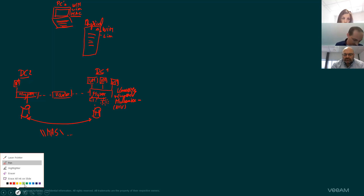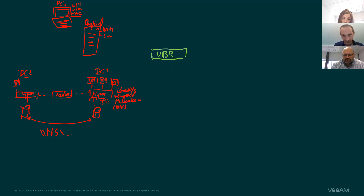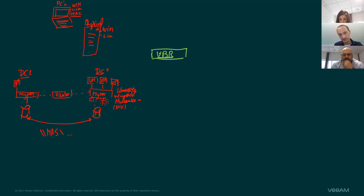We're going to add some colors — I'm using Veeam green. We have something called a VBR server. The VBR server can have multiple components. For the more technical audience: we have a VBR server that, for me, is just a scheduler. It's going to say: hey, it's 8 p.m., you need to start a backup job. Who is going to do the work? It's called a proxy.